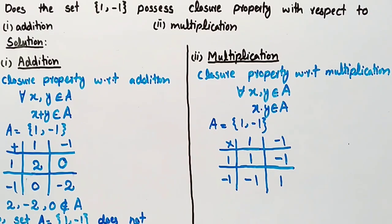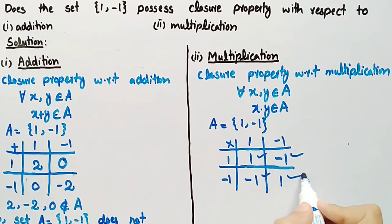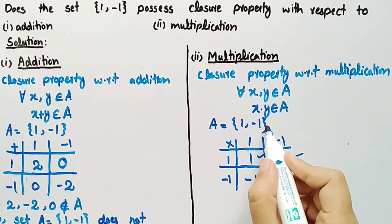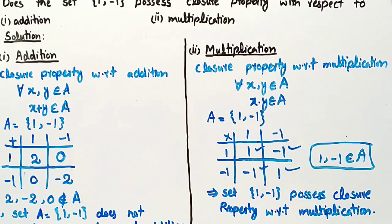We can clearly see that each of these elements belongs to set A. So, set A = {1, -1} possesses closure property with respect to multiplication.